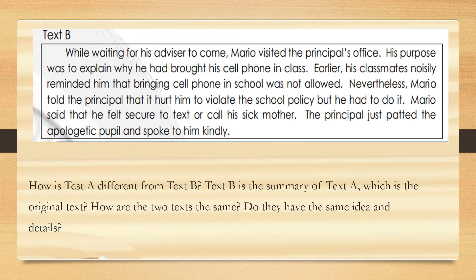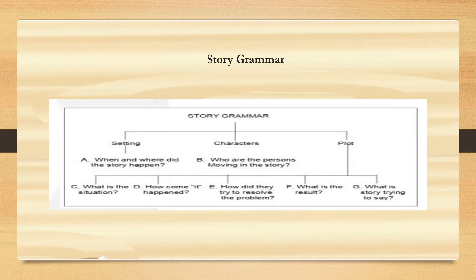So, how is Text A different from Text B? Text B is the summary of Text A, which is the original text. How are the two sets the same? Do they have the same idea and details? Likewise, you may also use a summary chart to organize your ideas like a story grammar. Try to look at the story grammar presented.